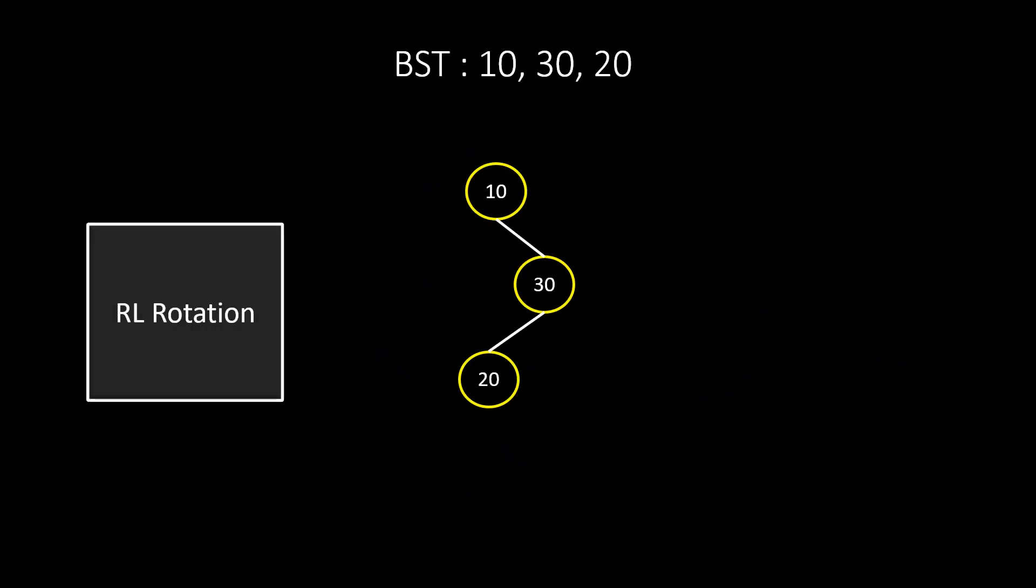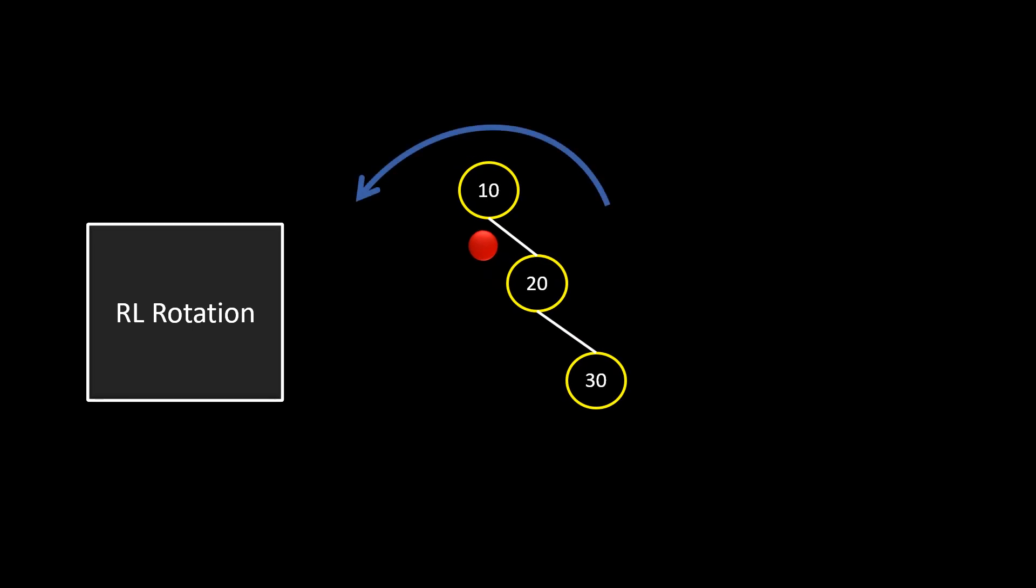Now, let's see RL rotation. So, we first fix a nail here and rotate these nodes to convert it to RR rotation which gives us this tree. Then, we shift the nail here and rotate left which will give us our balance tree. If we just look at the effect of the two rotations, the left node goes to the root and the root goes to the left of newly attached root.